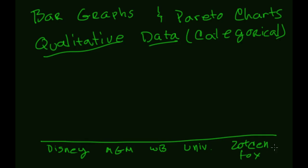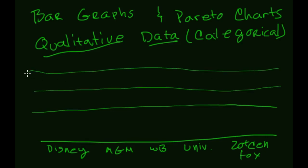And then let's say kind of create some lines here to give this some definition. Maybe there's 10, 20, 30, and let's say Disney had 30 some odd movies here.